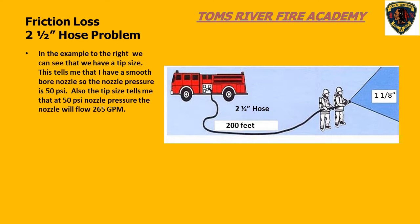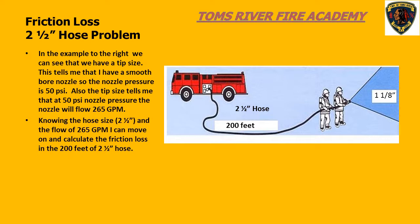In this example, we are using a nozzle with a tip size, so we know it is a smoothbore nozzle. From lesson two, we know that a smoothbore nozzle on a handline requires 50 PSI nozzle pressure. We are given a tip size of 1⅛ inches, and from our nozzle flow chart, a 1⅛-inch tip will flow 265 gallons per minute. We also know the length, which is 200 feet. We now have all the needed information to use the rule of thumb formula for 2.5-inch hose.